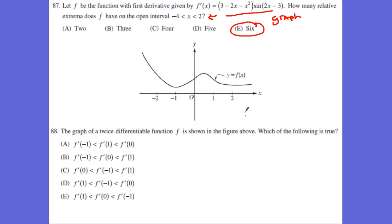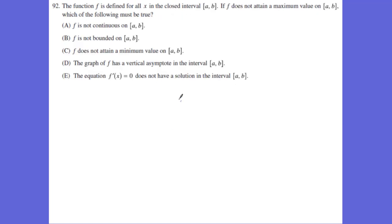Number 88: we have an f of x, and we want to know the differentiability of this, which means we're going to want to know the tangent line. The slope of the tangent line at 0 is a positive value, and the slope at 1 is a negative value, which means our answer is D: f prime of 1 is less than f prime of negative 1, which is less than f prime of 0.